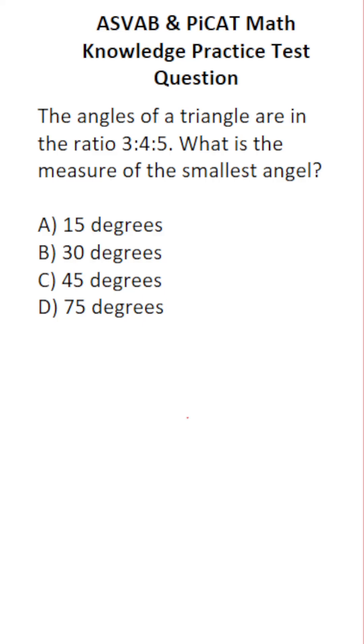This math knowledge practice test question for the ASVAB and PICAT says, the angles of a triangle are in the ratio of 3 to 4 to 5. What is the measure of the smallest angle?